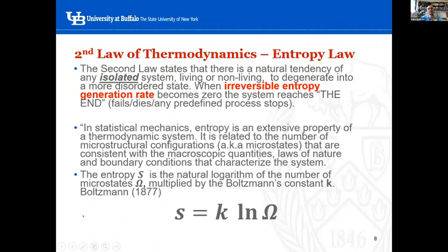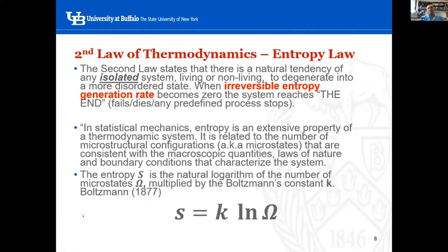The second law, going to Boltzmann's paper, states that there is a natural tendency of an isolated system — living or non-living — to degenerate to a more disordered state. This disorder means the order changed with respect to the initial order; it is relative with respect to the initial state. This does not mean there is no order — it is just relative.